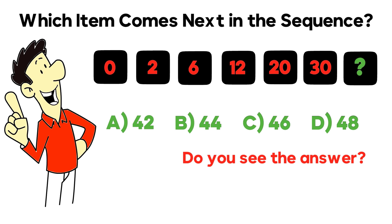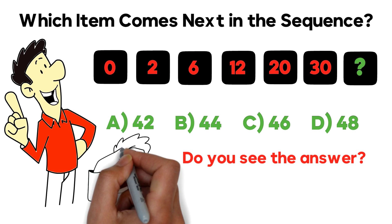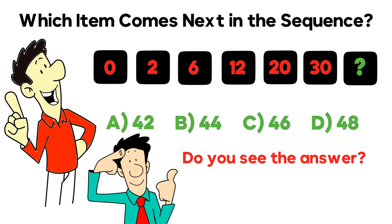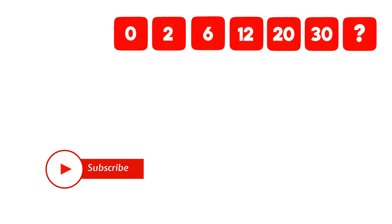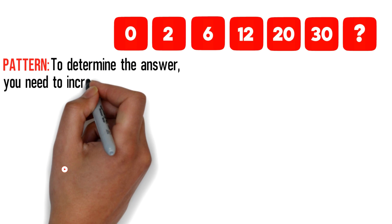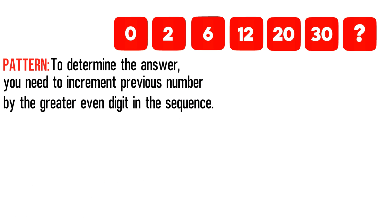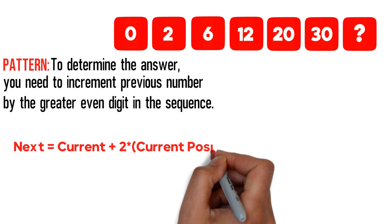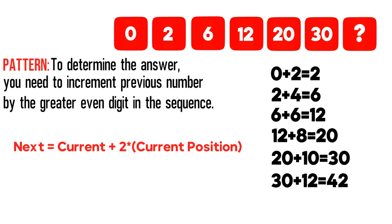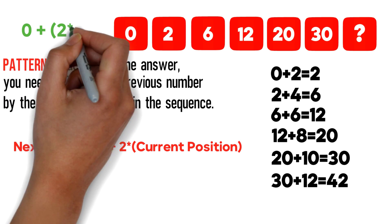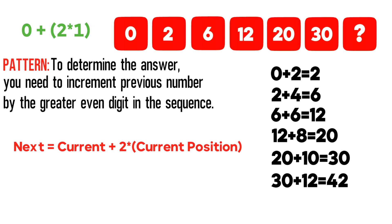Do you see the answer? It may or may not be obvious, depending upon your skills of detecting the pattern. To determine the answer in this particular case, you need to increment the previous number by the greater even digit in the sequence. You can even come up with a formula: the next number equals the current number plus 2 multiplied by the current position. You can also use the next even number and add it to the previous number. The even numbers are 2, 4, 6, and you increment them down the list.